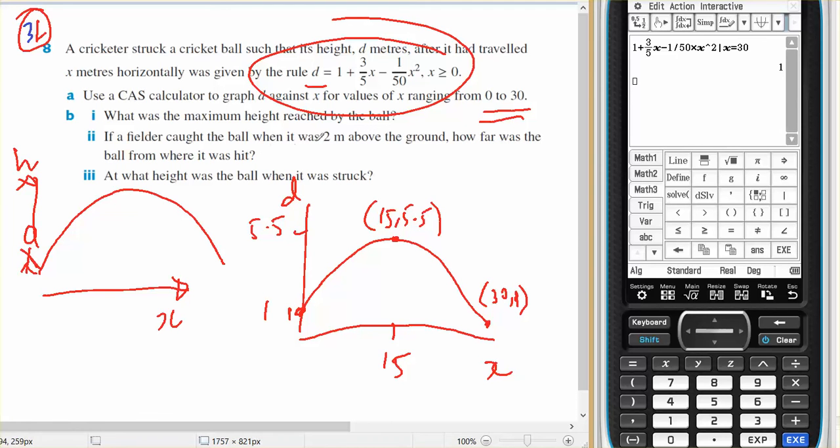If the fielder caught the ball when it was 2 metres above the ground, how far was the ball when it was hit? Well, if it was 2 metres above the ground, it could have been that far away from the bat, or this far away from the bat. So there's actually two answers.